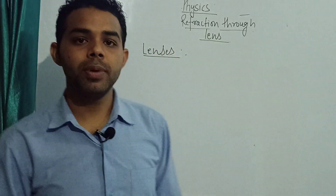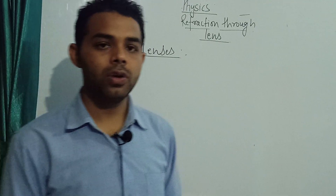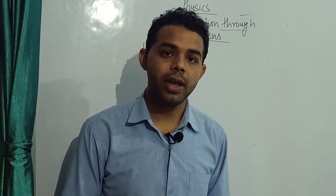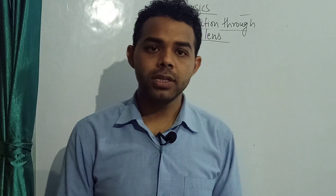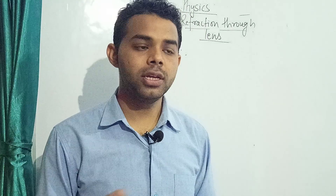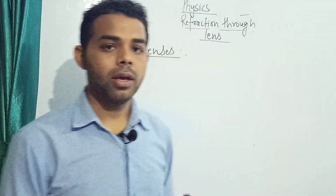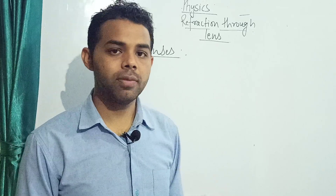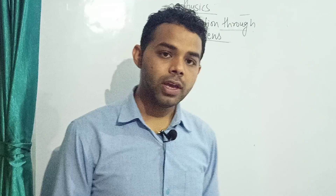In your syllabus of grade 10, we are having two types of lenses. We have to study two types of lenses, that is concave and convex. Inside these types, we are having further subtypes like bi-convex lens. If you talk about the convex lens, we have bi-convex lens, concave-convex, and convexo-concave.